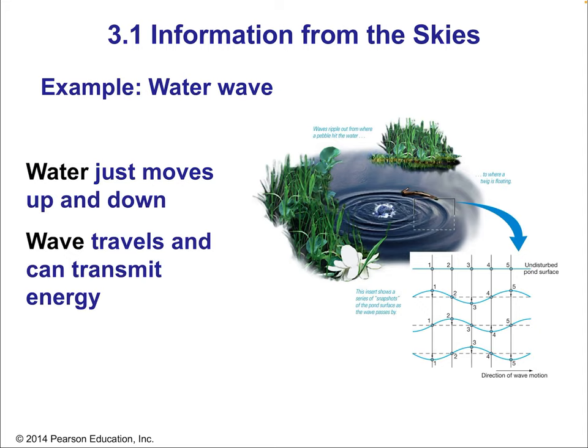Water waves: the water just moves up and down, it does not move side to side. The wave travels and can transmit energy — there's a way of transmitting energy through a medium without carrying the medium with it. Ripples in the pond don't carry the pond with them; they just dissipate the energy, in this case the kinetic energy of the rock which came to a sudden stop when it hit the water.